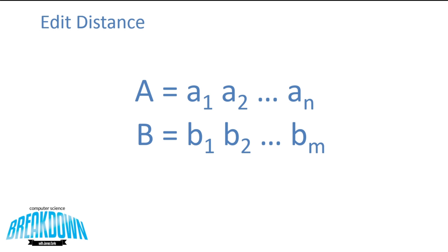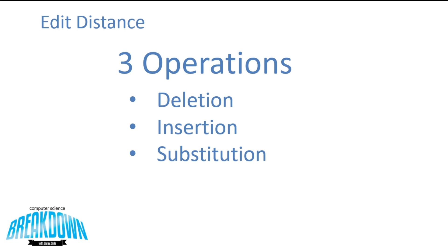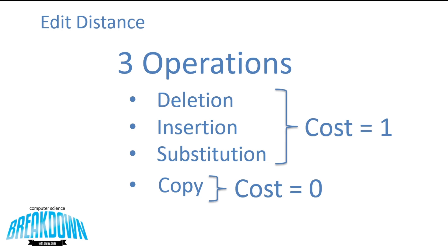When we're trying to transform A to B, we have three operations: deletion, insertion, and substitution. For our purposes, we're going to give all of these operations a cost of one. There is a fourth operation, copying, but we're going to give this a cost of zero, because copying is the same as substitution — it only occurs when two letters are the same.